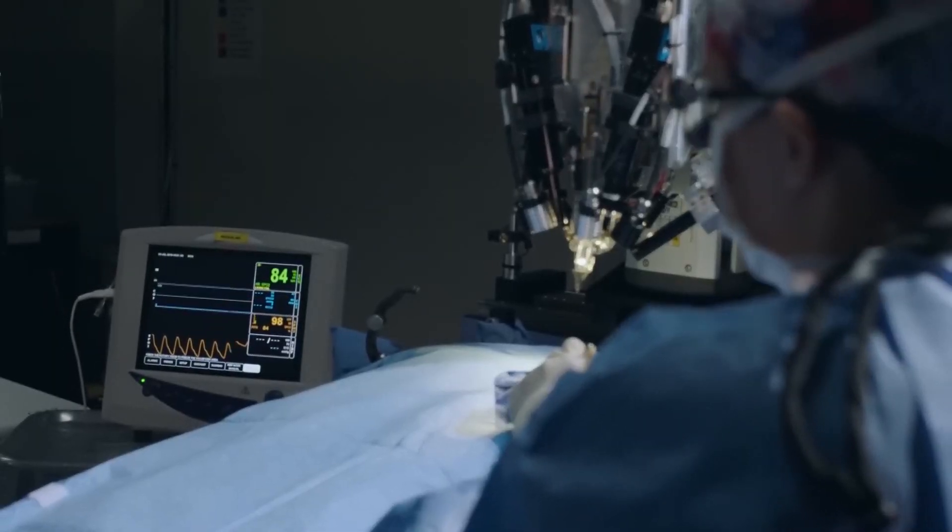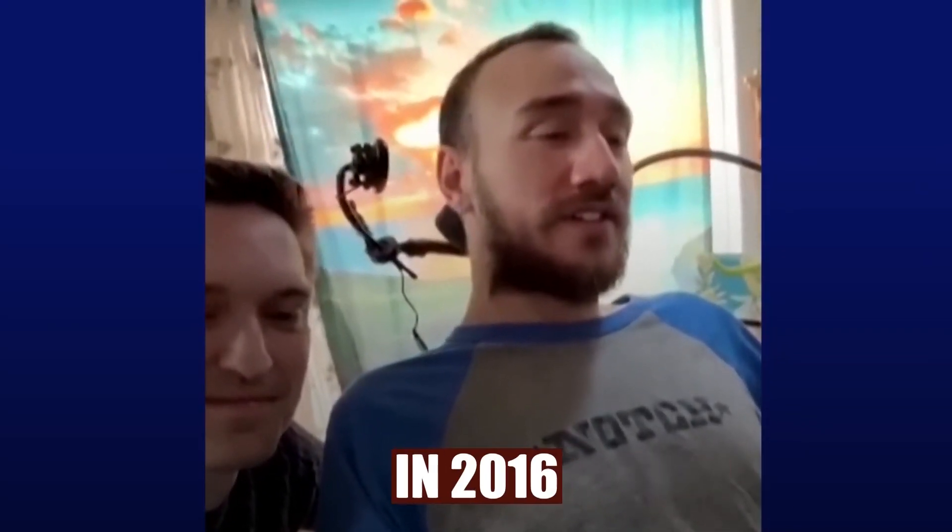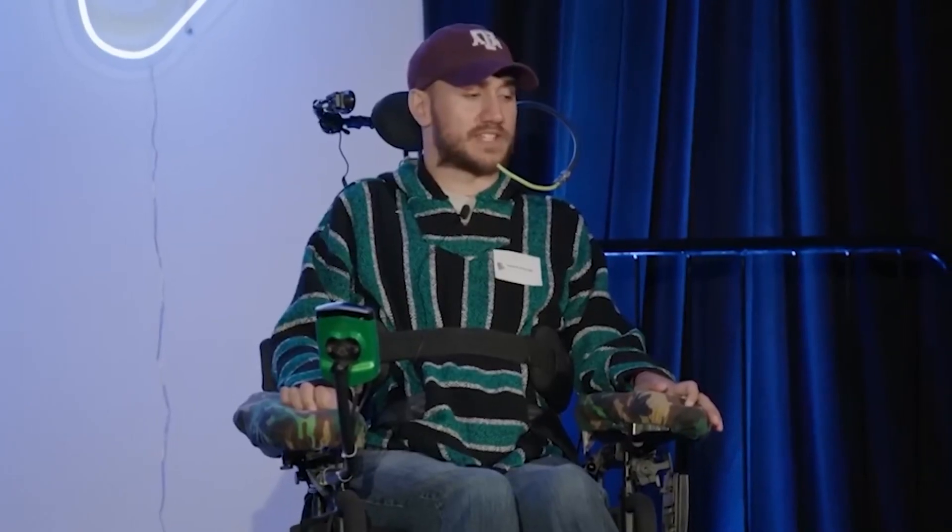The first person to receive brain implantation from Elon Musk and his team is Nolan Arbaugh, a 29-year-old man who was paralyzed in a diving accident back in 2016. Due to the accident, Nolan's C4 and C5 spines were dislocated, leaving him completely quadriplegic, with no sensation or movement below his shoulders.